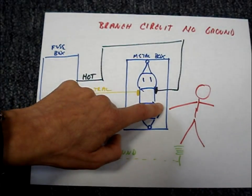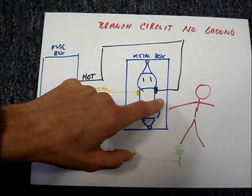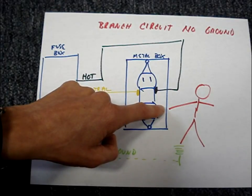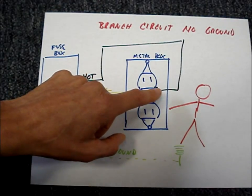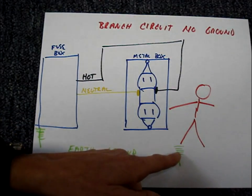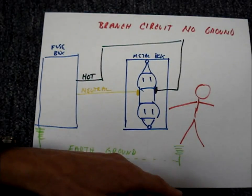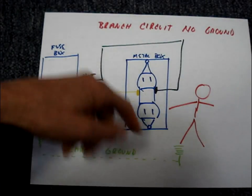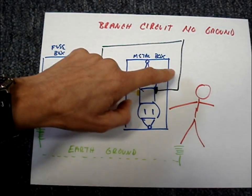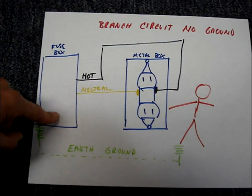It would be energized and if a person came along and touched this box, you would get a shock. If you were standing in some water and didn't have any shoes on, that may be the right conditions to complete the path for current to go back to the source through ground.